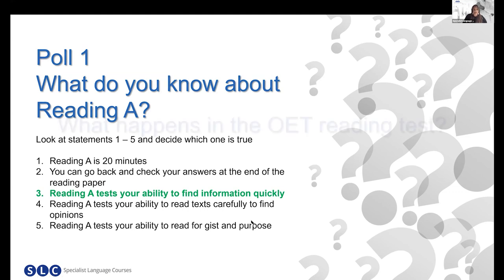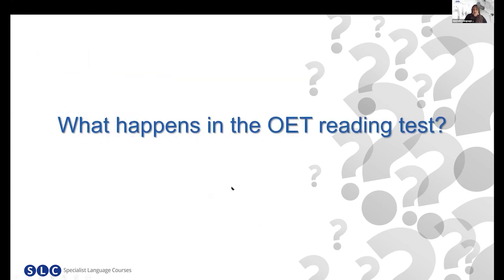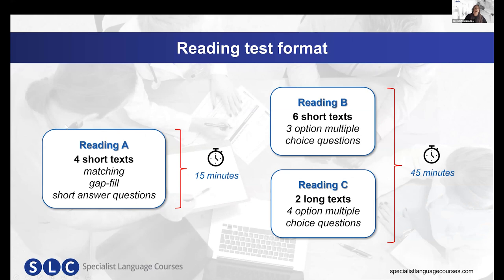So let's clarify what happens in OET Reading Part A. Part A is 15 minutes only. You have four short texts and then tasks to complete: a matching task, a gap fill task, and a short answer question task. The whole reading paper is 60 minutes, and B and C are 45 minutes — we'll talk about Reading B and C in another live lesson coming soon.